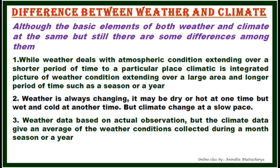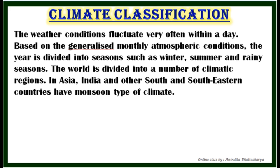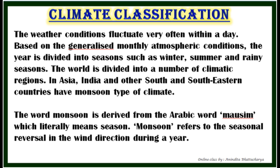Weather data is based on actual observation, while climate data gives an average of weather conditions collected over a month, season, or year. Weather conditions fluctuate frequently within a day. Based on generalized monthly atmospheric conditions, the year is divided into seasons such as winter, summer, and rainy. The world is divided into climatic regions; in Asia, India and other South and Southeast Asian countries have a monsoon type of climate. The word monsoon is derived from the Arabic word 'mausim,' which literally means season. Monsoon refers to the seasonal reversal in wind direction during a year.